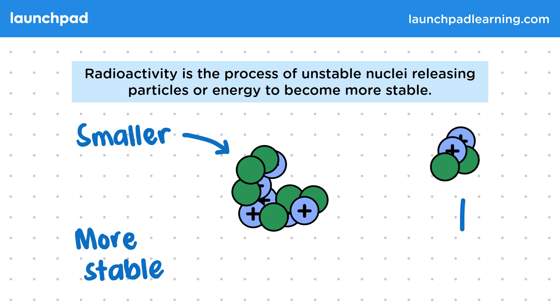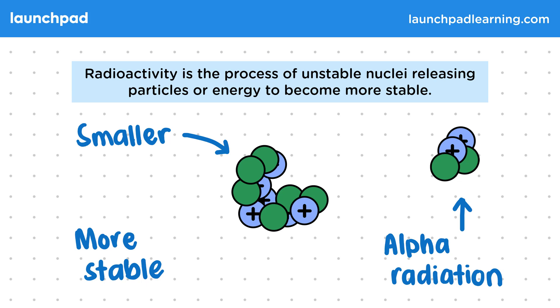Alpha radiation is just an example of one type of radiation. Charge or energy can also be released for the nucleus to become more stable.